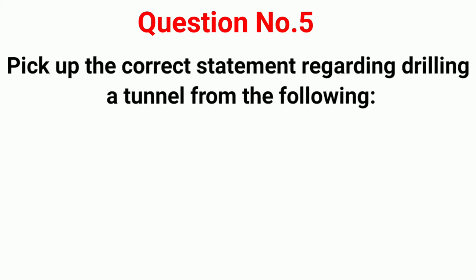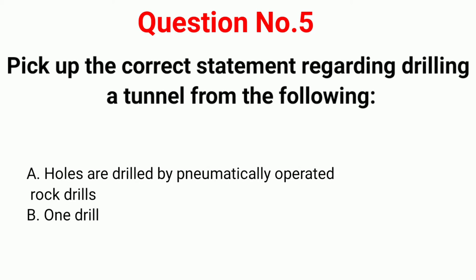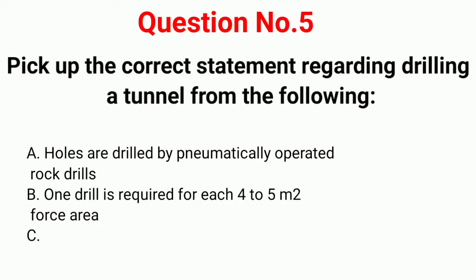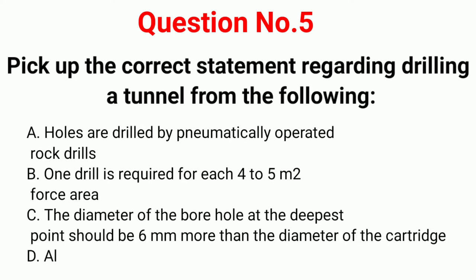Question number 5. Pick up the correct statement regarding drilling a tunnel from the following. Option A: Holes are drilled by pneumatically operated rock drills. Option B: One drill is required for each 4 to 5 square meter of face area. Option C: The diameter of the bore hole at the deepest point should be 6 mm more than the diameter of the cartridge. Option D: All of the above.